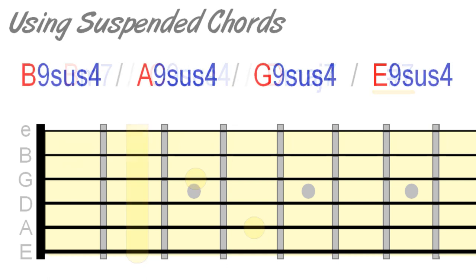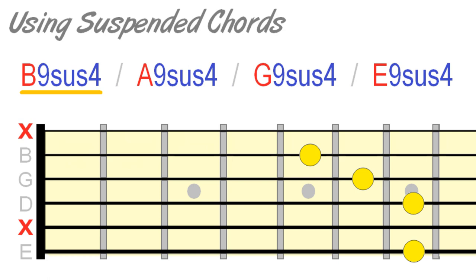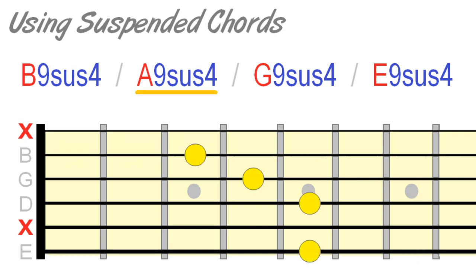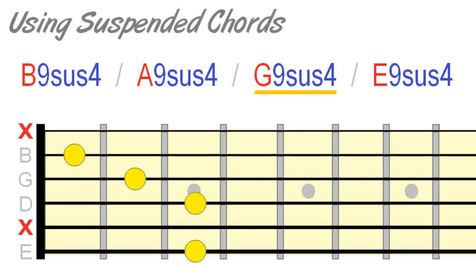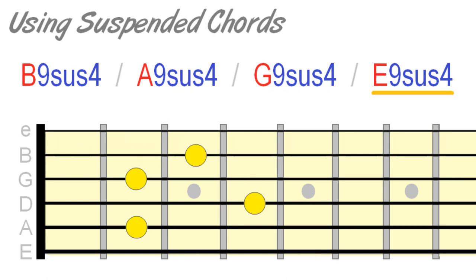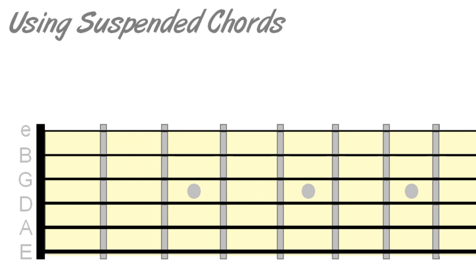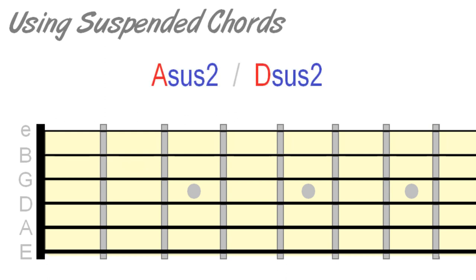You can even play a straight sequence of suspended fourth chords for a buildup of tension. Like sus4 chords, suspended second chords can be used in place of any major or minor chord. However, they tend to sound most at home in the tonic and four chord positions.